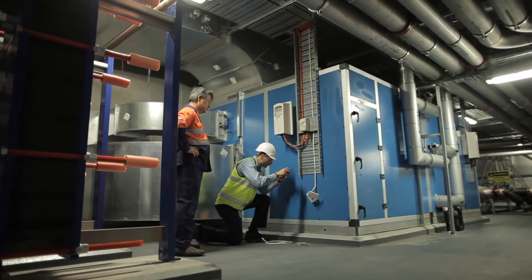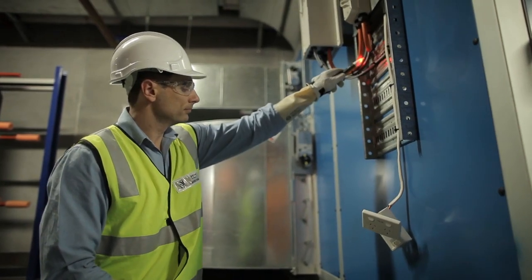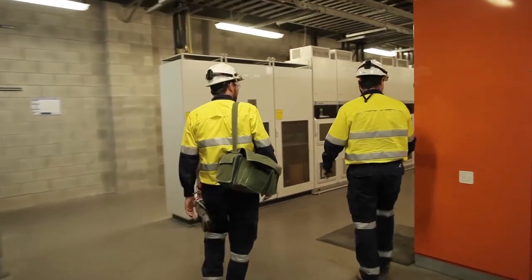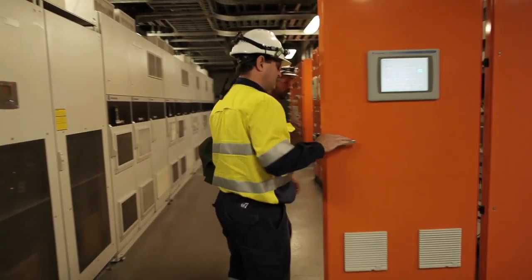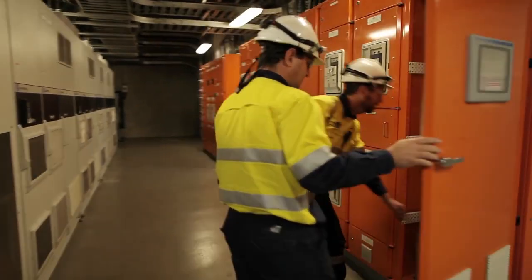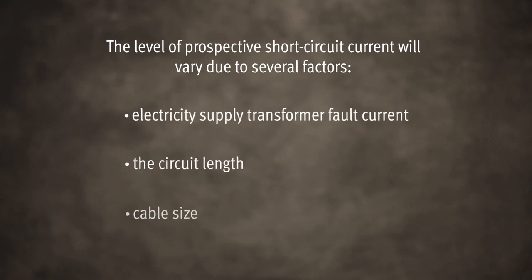High fault currents are not just limited to large main switchboards. They can also occur within other locations of the installation, such as smaller switchboards, electrical supply pillars, or large electrical equipment. The level of prospective short circuit current will vary due to several factors, such as the electricity supply transformer fault current, the circuit length, and the cable size.